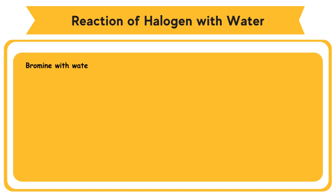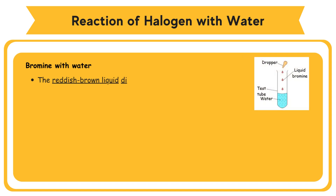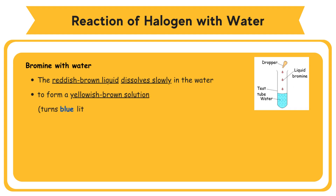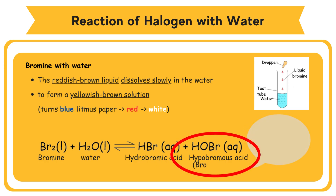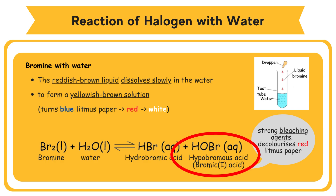For bromine with water: the reddish-brown liquid dissolves slowly in water to form a yellowish-brown solution. This solution turns blue litmus paper to red, and then white. Bromine reacts with water to become hydrobromic acid and hypobromous acid (bromic-1-acid). Hypobromous acid is a bleaching agent. It decolorizes the red color of litmus paper.